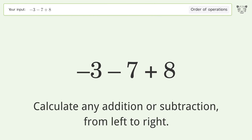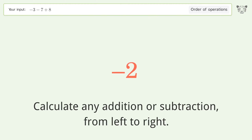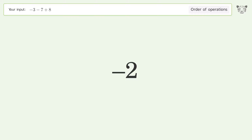Calculate any addition or subtraction from left to right. Negative 3 minus 7 equals negative 10. Negative 10 plus 8 equals negative 2. And so the final result is negative 2.